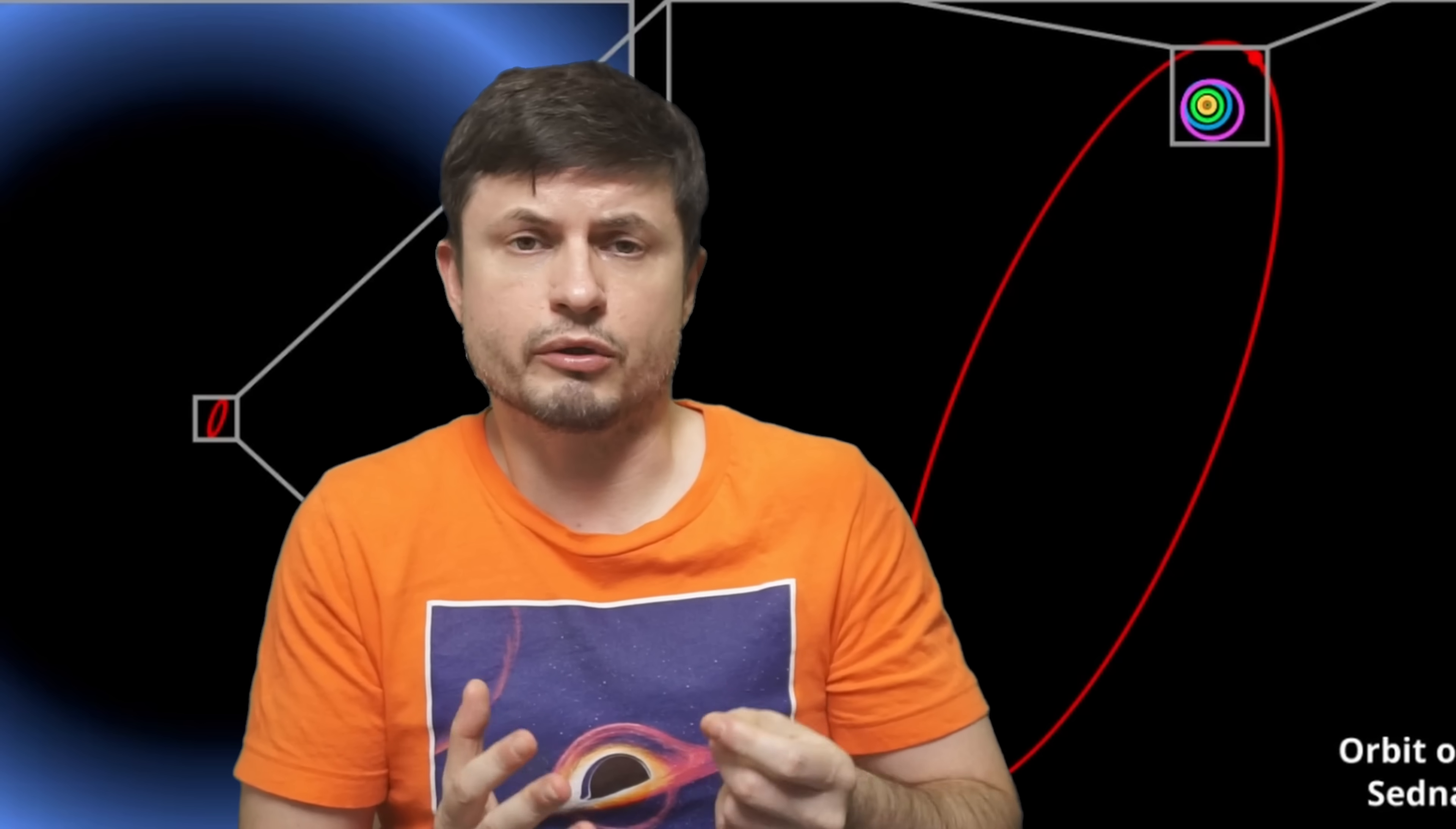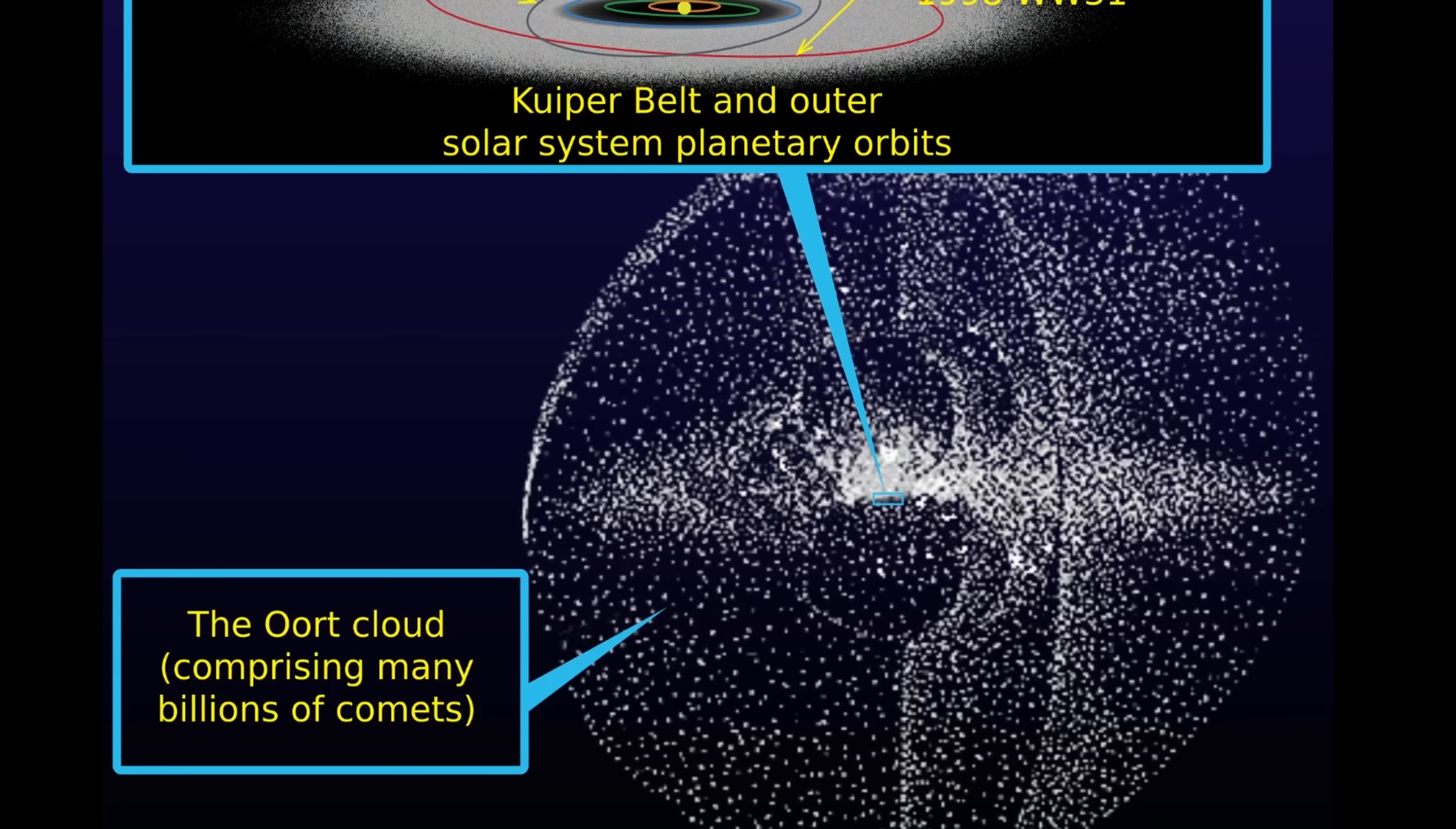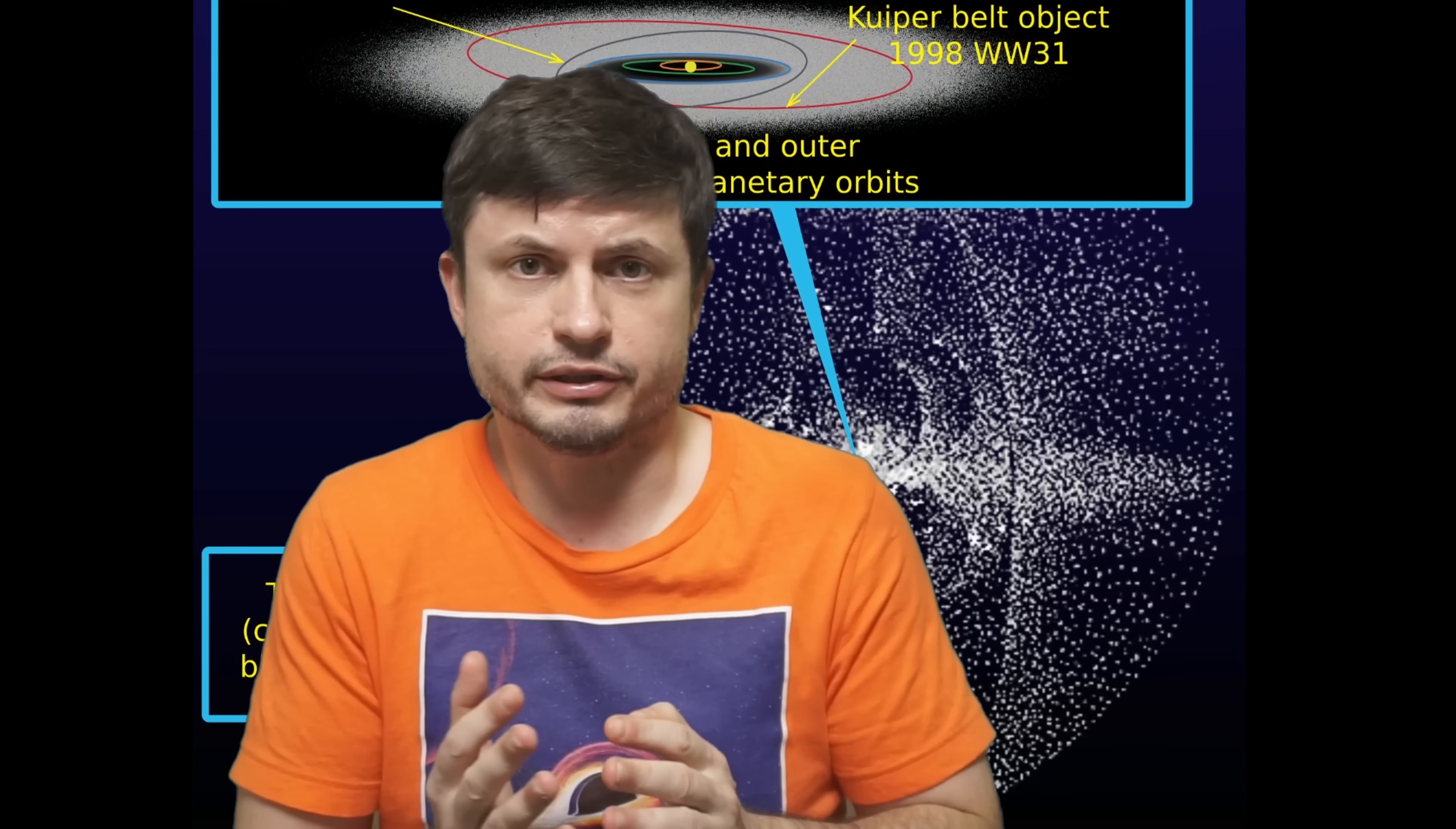Because eventually this proposition was accepted, this area or reservoir of comets was named in his honor: Oort Cloud. But basically everything we know about it is essentially theoretical.